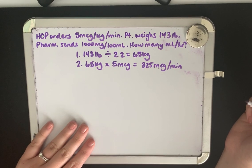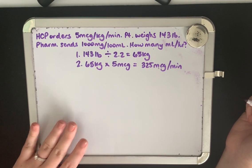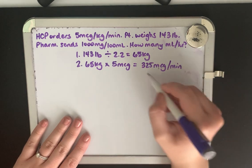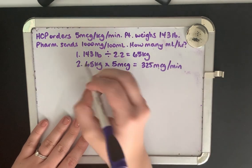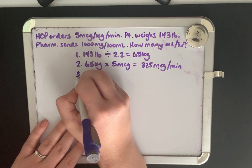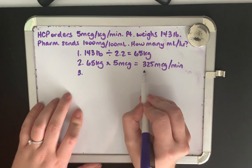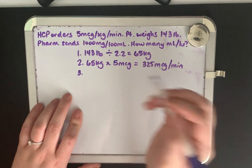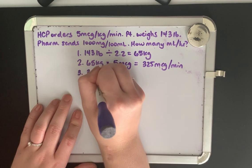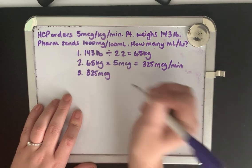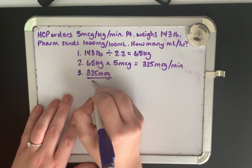Now third, we need to convert this and see how many mLs per hour equate to this dosage. A little tricky but we'll walk through it. So for step three, let's start with what we know. We know that our dosage is 325 micrograms per minute and we're giving this over one minute.